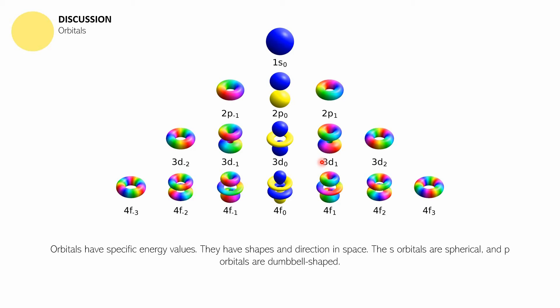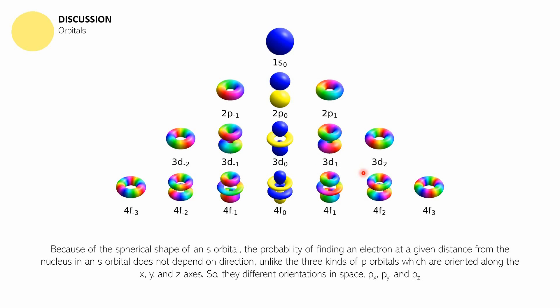The s orbitals are spherical and p are like dumbbells. Because of the spherical shape of the s orbital, the probability of finding an electron at a given distance from the nucleus in an s orbital does not depend on direction—it's the same because it's a sphere. Unlike the three kinds of p orbitals, which are oriented along the x, y, and z axis, they differ in orientations: px, py, and pz.